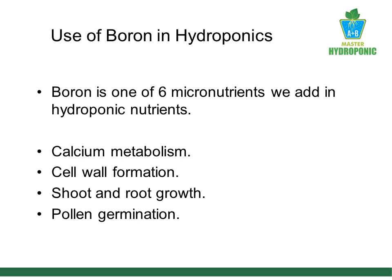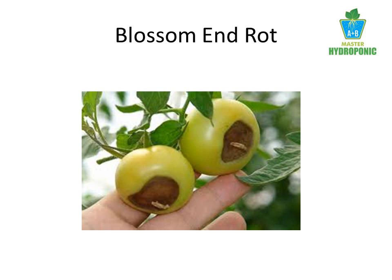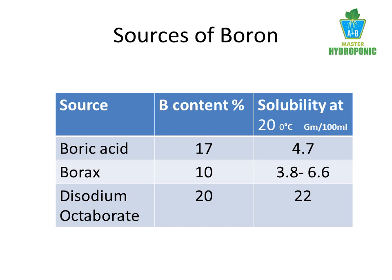Deficiency of boron affects the growth of shoots and roots. It also affects pollen grain formation and germination. Insufficient boron can cause curling of leaves due to uneven cell growth. Blossom end rot takes place at the end of fruits like tomatoes, chilies, and cucumber, as the cell walls of the fruits are weak.